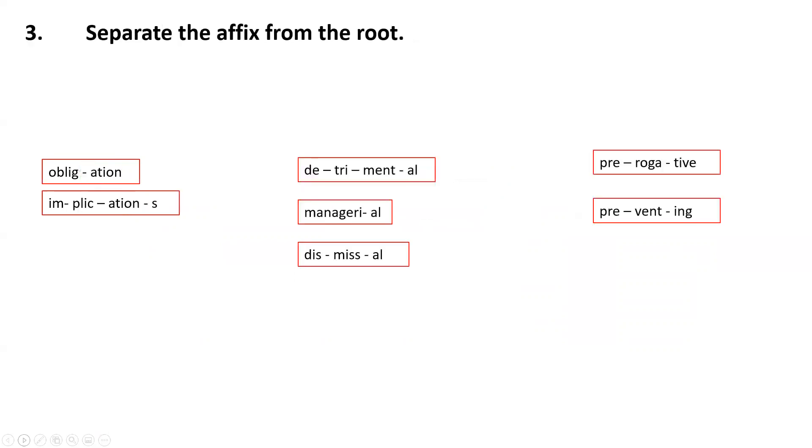Next I need to separate the affixes from the root, and you can see it here how I did that. And here it becomes clear that, okay, I grouped them according to some affixes, but they also have roots and other parts of the word there. So I basically need to analyze all of them in order to understand the meaning of the word.